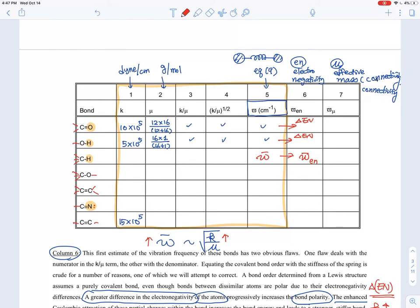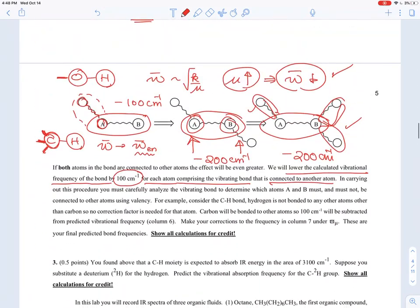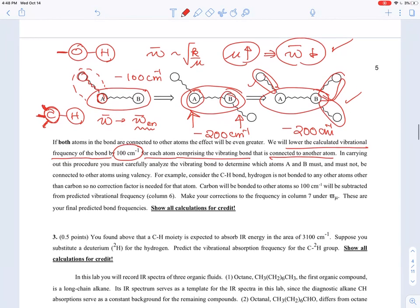So what I'm saying is the mu wave number correction is mu electronegativity corrected wave number minus 100 or minus 200 depending on the connectivity values, and that's the value that you need to put it down in column seven.